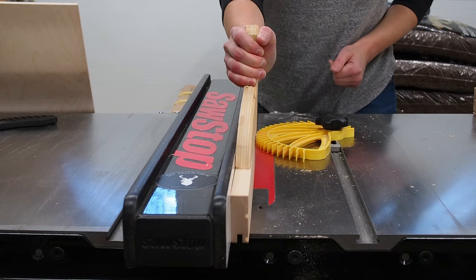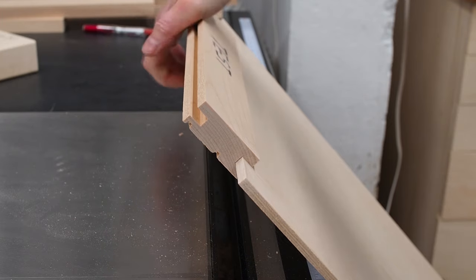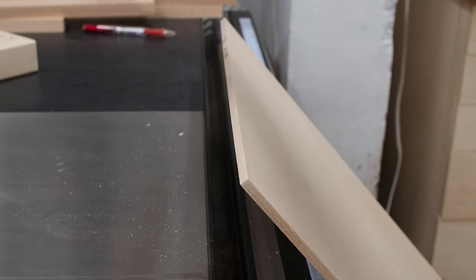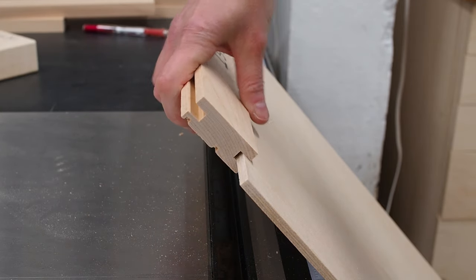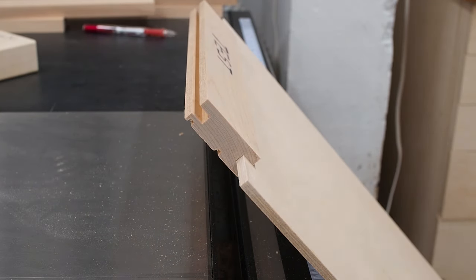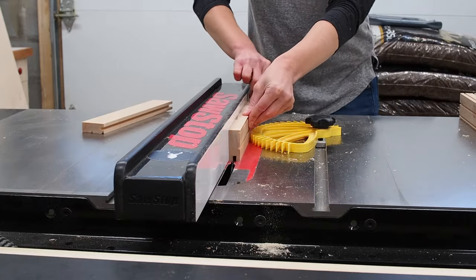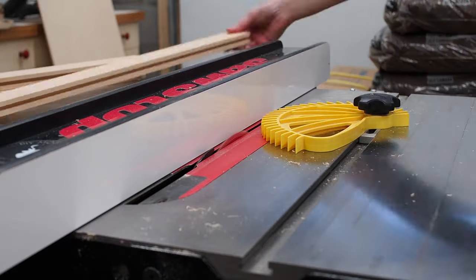So back at the table saw, I moved the fence in just a tad, and ran my test piece through one more time. I did another test, and perfect! The idea here is to get a friction fit, meaning it goes in easily without forcing it, and without being too loose. So with my settings dialed in perfectly, I could now run my four pieces through, both front and back, and be confident that I would get the perfectly sized groove, dead center.